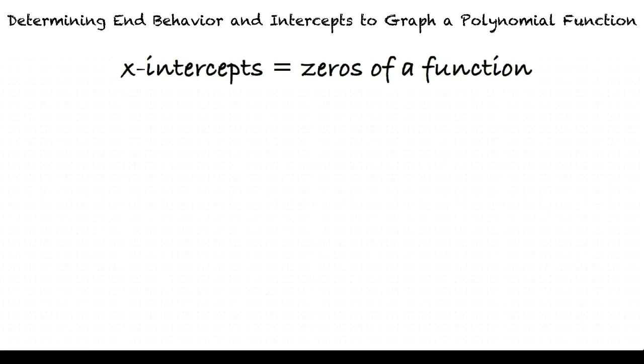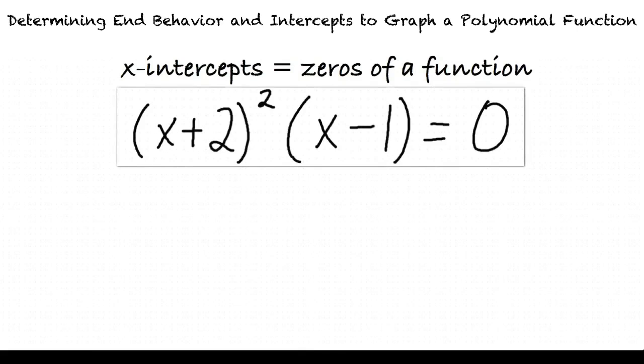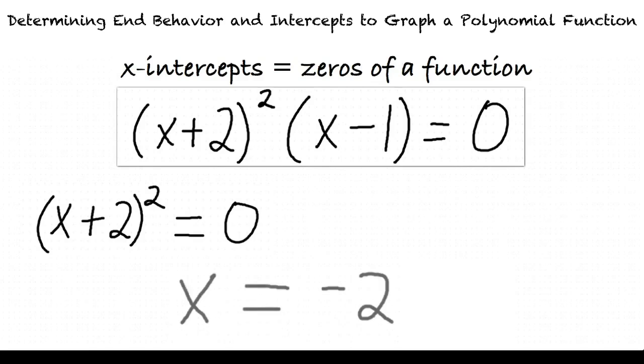Thus, in order to find the zeros, we must set each binomial equal to 0, then solve for x. Solving (x+2)² = 0 yields -2 for x, and solving x-1 = 0 yields 1 for x. Therefore, at x = -2 and x = 1, the graph will at least touch the x-axis.